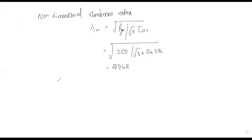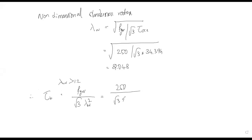Since lambda_w is greater than 1.2, tau_b equals fi_w divided by root 3 into lambda_w squared. Substituting fi = 250 and lambda_w = 2.048 gives tau_b equal to 34.41 N/mm².